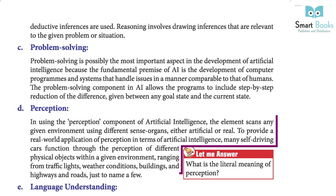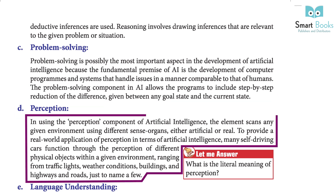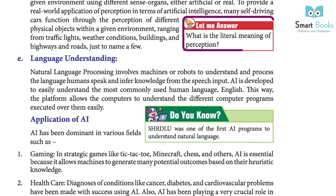D. Perception: In using the perception component of AI, the elements scan any given environment using different sense organs, either artificial or real. To provide a real-world application of perception in AI, many self-driving cars function through the perception of different physical objects within a given environment, ranging from traffic lights, weather conditions, buildings and highways and roads, just to name a few. Let me answer: What is the literal meaning of perception?